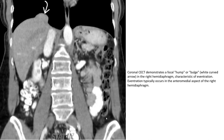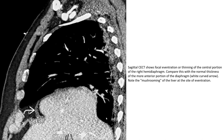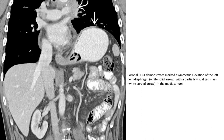This coronal contrast-enhanced CT shows a hump or bulge in the right hemidiaphragm characteristic of eventration. Eventration typically occurs in the anteromedial aspect of the right hemidiaphragm. Contrast-enhanced CT demonstrates eventration or thinning of the central portion of the right hemidiaphragm.